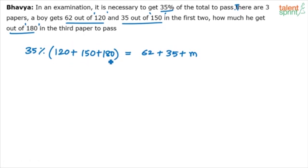35% of the maximum score of three papers should be equal to the individual scores in the three papers. These two have to be balanced. Solve this now. Now, it all depends on how quickly do you do the calculation. Now, 120 plus 180 is 300. 300 plus 150 is 450. 450.